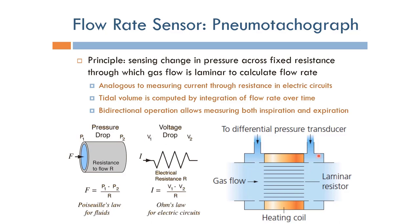One advantage of this particular sensor is that it has bi-directional operation. We can detect flow going this way or that way. So we can use it to measure both inspiration and expiration tidal volume, which is unique to this particular sensor.